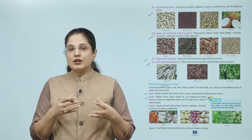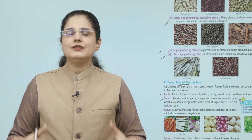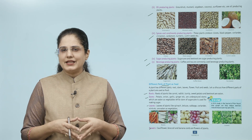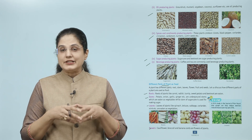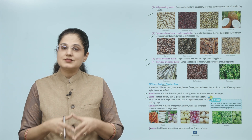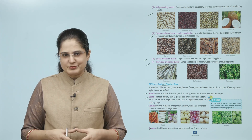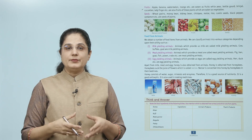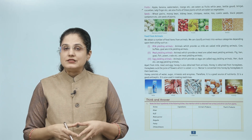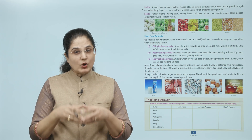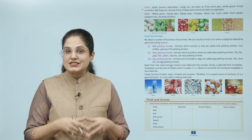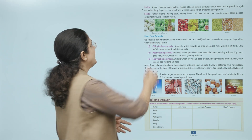Plants ke alag-alag hisse — root, stem, leaves, flower, fruit aur seeds — alag-alag plants ke in hisson ko hum food ki tarah use karte hain. A 2010 study in the Journal of Pain found that ginger can help reduce exercise-induced muscle pain by up to 25 percent. Fruits like apple, banana, watermelon, mango, etc. are eaten as fruits, while peas, bottle gourd, brinjal, cucumber, lady finger, etc. are also fruits eaten as vegetables.